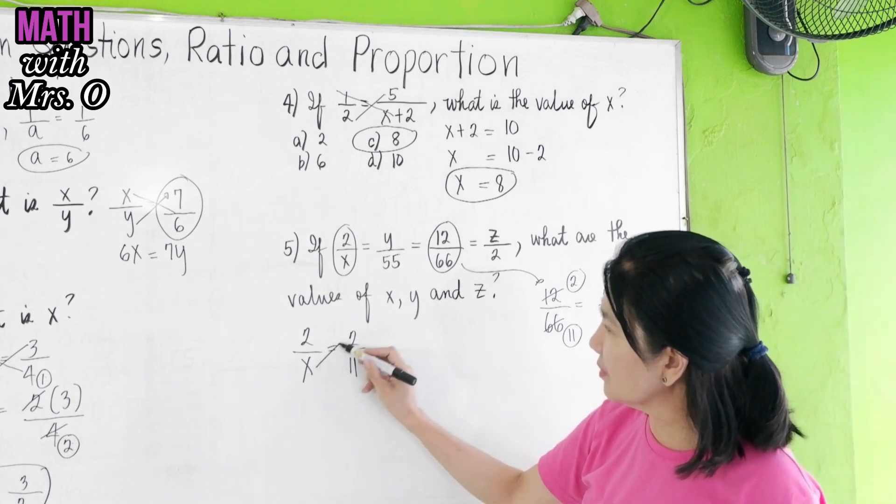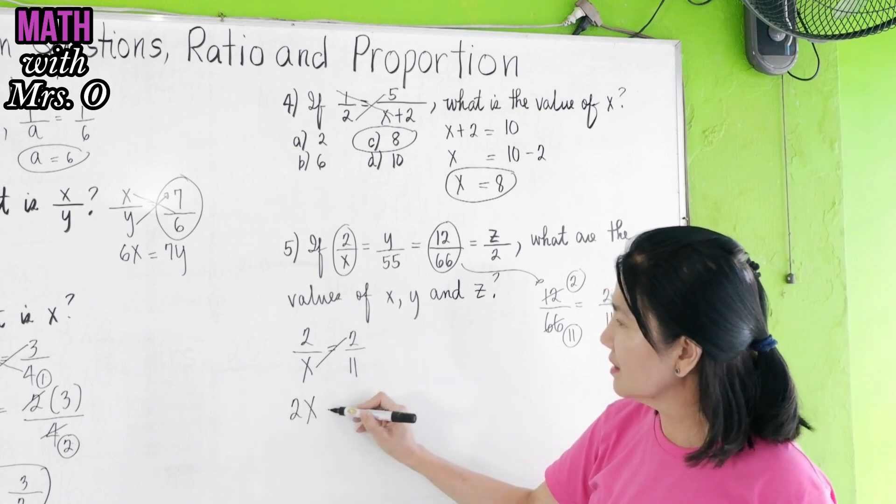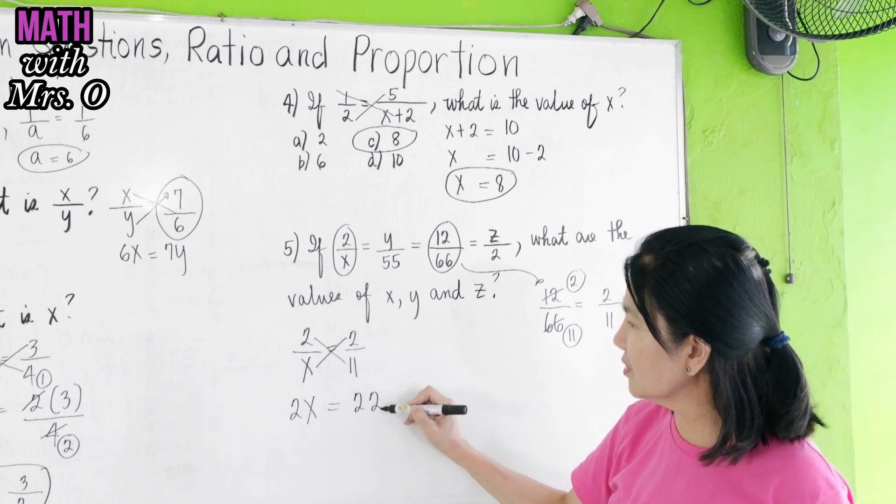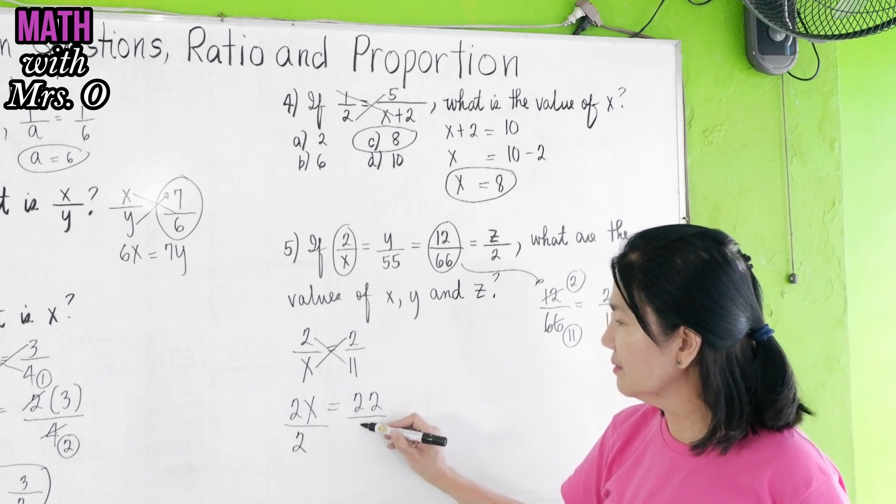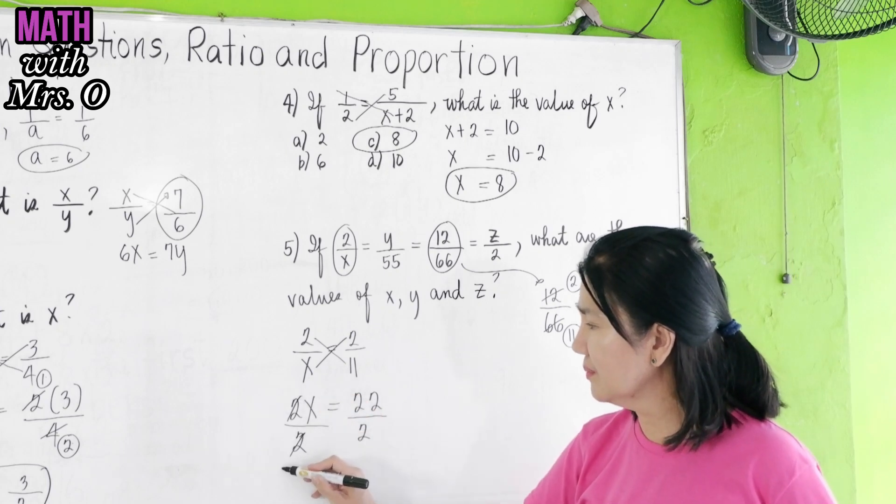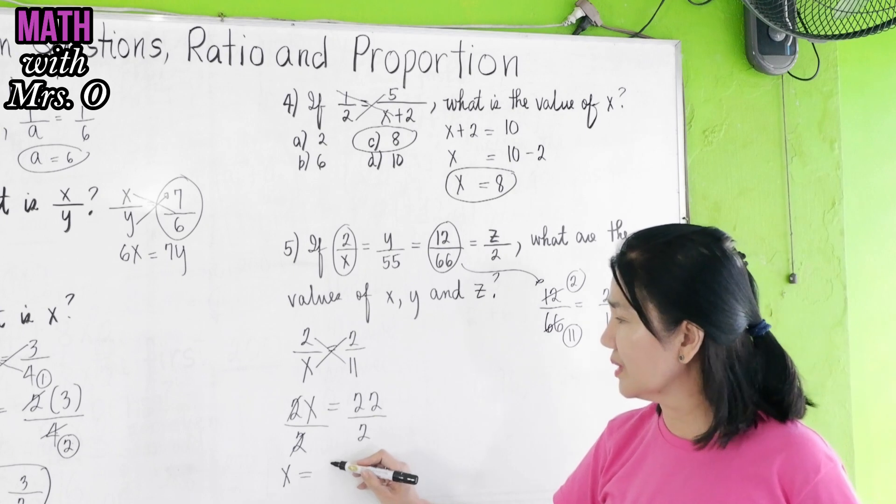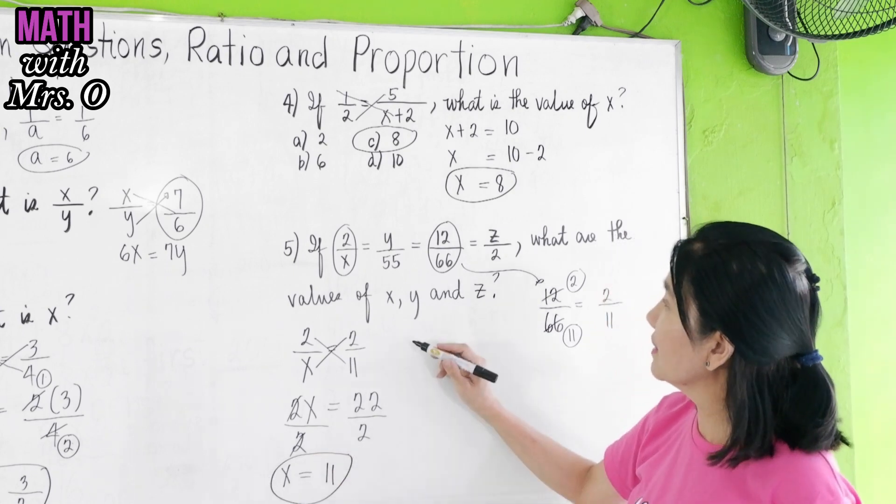Then, cross multiply. x times 2 is 2x, equals 2 times 11, is 22. Then, isolate x, divide by 2, on both sides. Cancel 2. x is equal to 22 over 2 is 11.